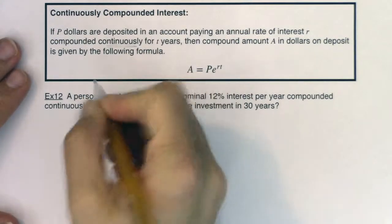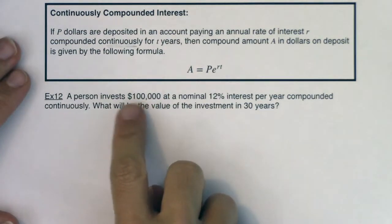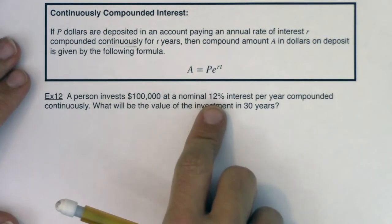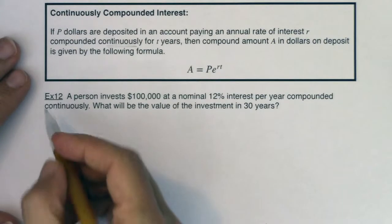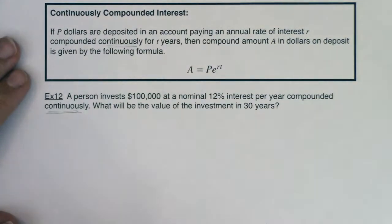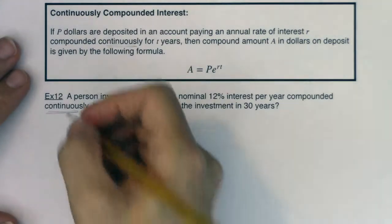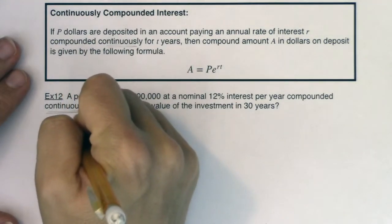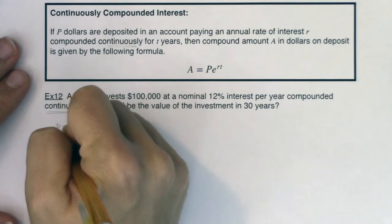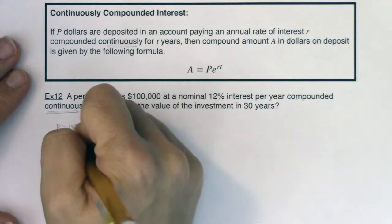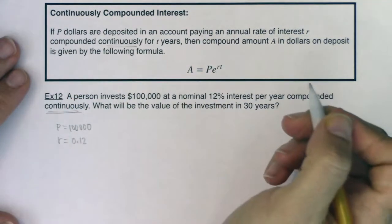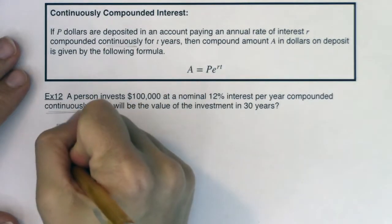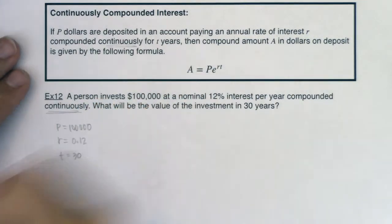We have a person investing $100,000 at a 12% interest rate per year. But this time you see it's compounded continuously. What will the value of the investment be in 30 years? My P is $100,000. My r, it's 12%, but I'm going to write it as a decimal 0.12. And I'm going to leave that money in there for 30 years.